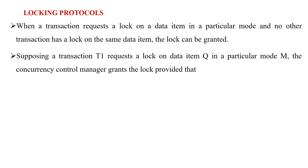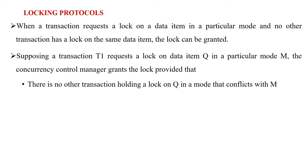When transaction T1 requests a lock on data item Q in a particular mode M, the concurrency control manager will grant that lock. No other transaction will hold a lock on Q in a mode that conflicts with M. For example, in exclusive mode, the data item is completely held by T1 for read and write operations until it is released.